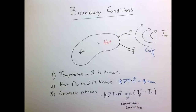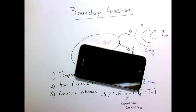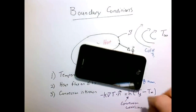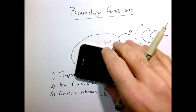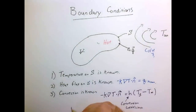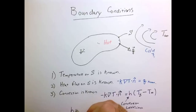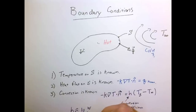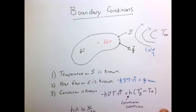As a rule of thumb I like to remember: if you have a hot object, such as my phone, and you imagine it being raised to a high temperature and cooling off on a desk just by air, an approximate value of H would be 10 watts per square meter Kelvin.